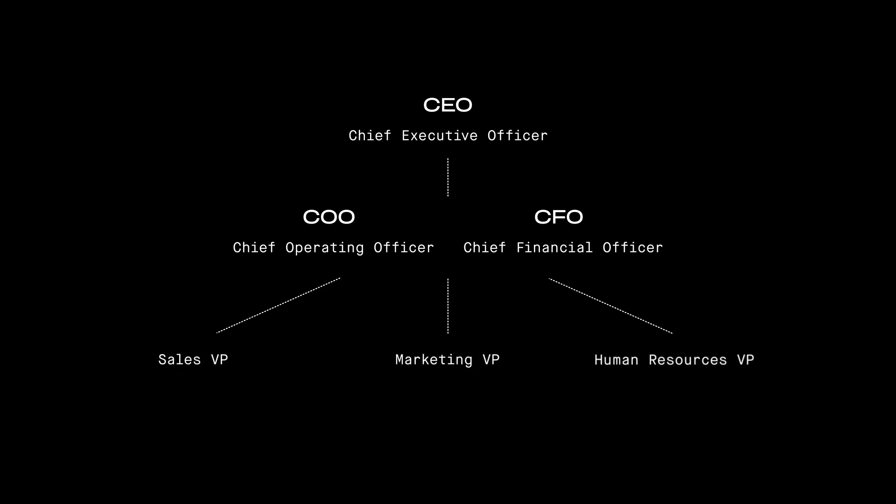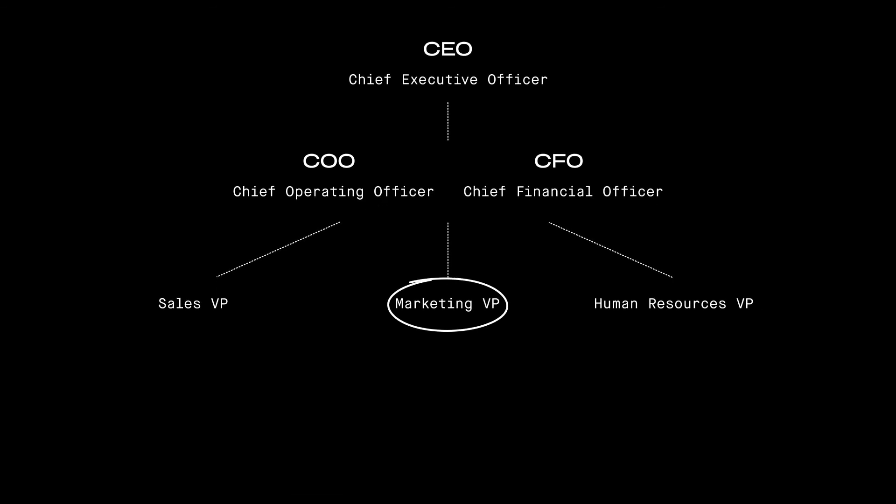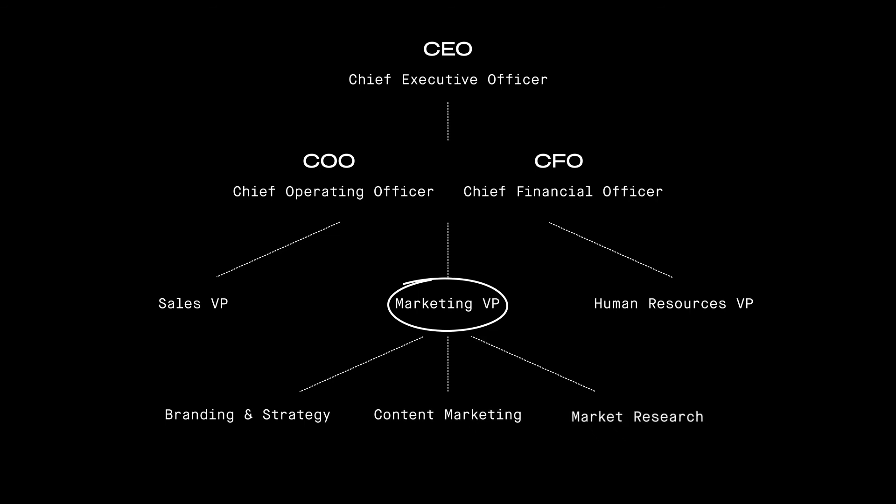Below the C-suite are vice presidents, the second highest level of management. They oversee functional areas of the company that are often known as departments. Sales is a department, as are marketing and human resources. Departments are split into divisions that handle specific tasks in those categories. For example, the marketing department may contain divisions for branding and strategy, content marketing, and market research. Each of these divisions will have a director, who oversees the strategy of that division and coordinates it with other parts of the company.